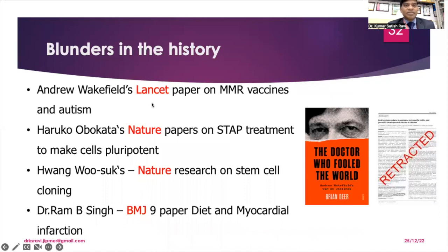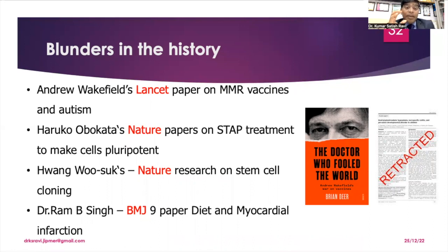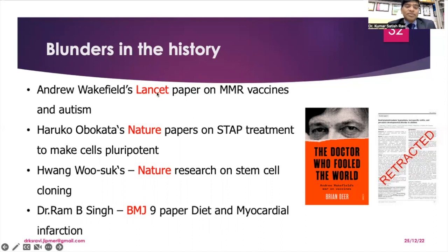There are well-documented cases of researchers retracting papers due to data falsification. In the MMR autism case, Andrew Wakefield had an undisclosed monetary conflict of interest and was found to have violated human subjects protection rules in research published in The Lancet. The British Medical Journal also found that Wakefield falsified data. As a result, The Lancet retracted the paper, though it took almost a decade, and this provided support for the anti-vaccine movement.